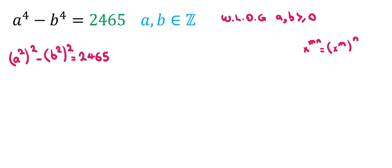Now we want to use a famous identity: x squared minus y squared equals x plus y times x minus y. Now if you apply it here, it will be a squared plus b squared times a squared minus b squared equal to 2465.